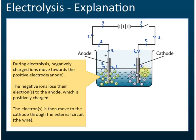So now the negative terminals have a lot of electrons. Electrons are released by the negative ions and then move to the cathodes.